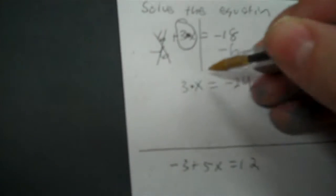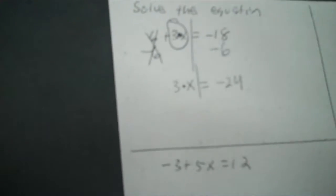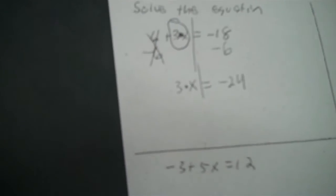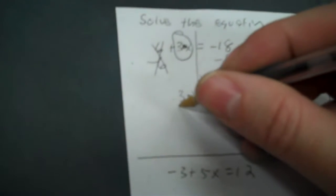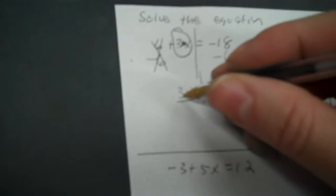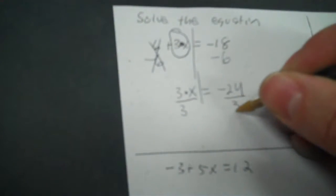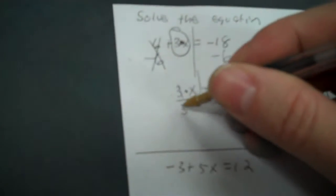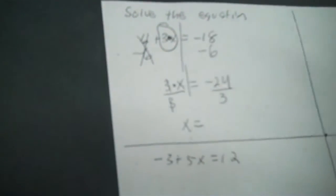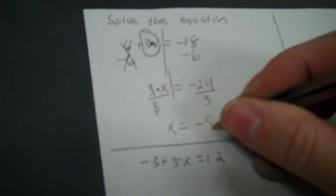Now it's down to just a one step. I make my wall again. What's happening to x now? It's just being multiplied. So we do the opposite, which is to divide by 3. I take negative 24 divided by 3, I get negative 8. So the answer for x is negative 8.